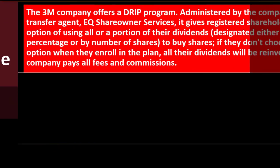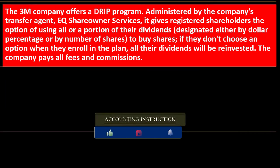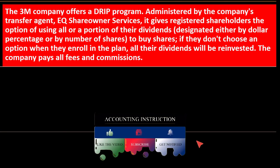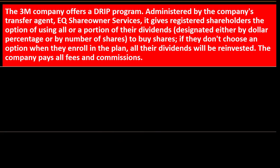A real-world example: the 3M Company offers a DRIP program administered by the company's transfer agent, EQ Shareowner Services. It gives registered shareholders the option of using all or a portion of their dividends — designated by dollar amount, percentage, or number of shares — to buy additional shares. If they don't choose an option when they enroll in the plan, all their dividends will be reinvested. The company pays all fees and commissions.